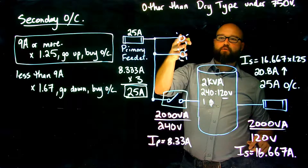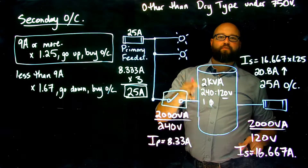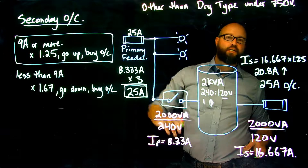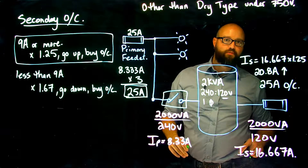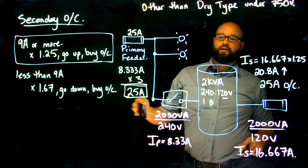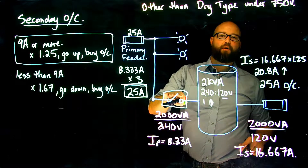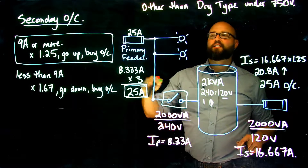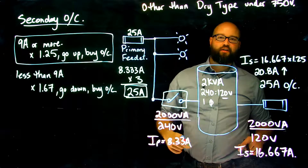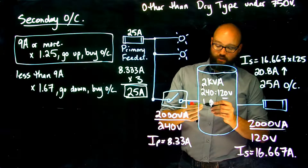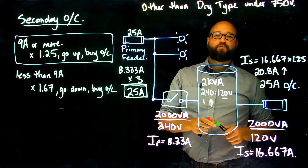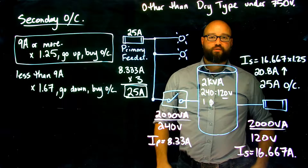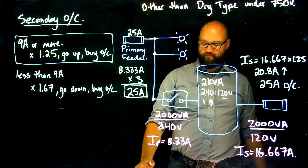If there were more loads on the feeder and it was exceeding 25 amps, I would actually have to put my primary protection back in — I cannot exceed that value. Hopefully this series of videos has helped. Thank you for watching; we'll see you next time.